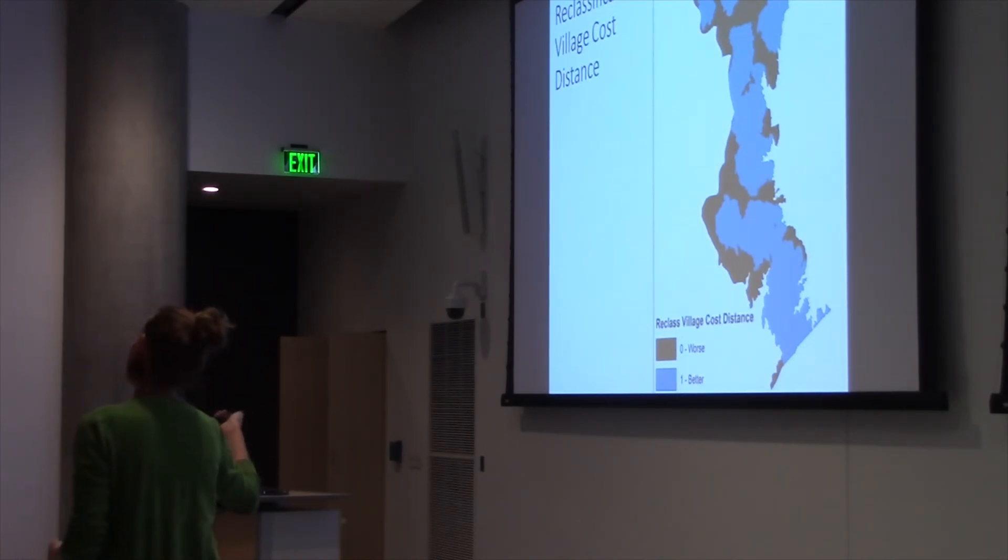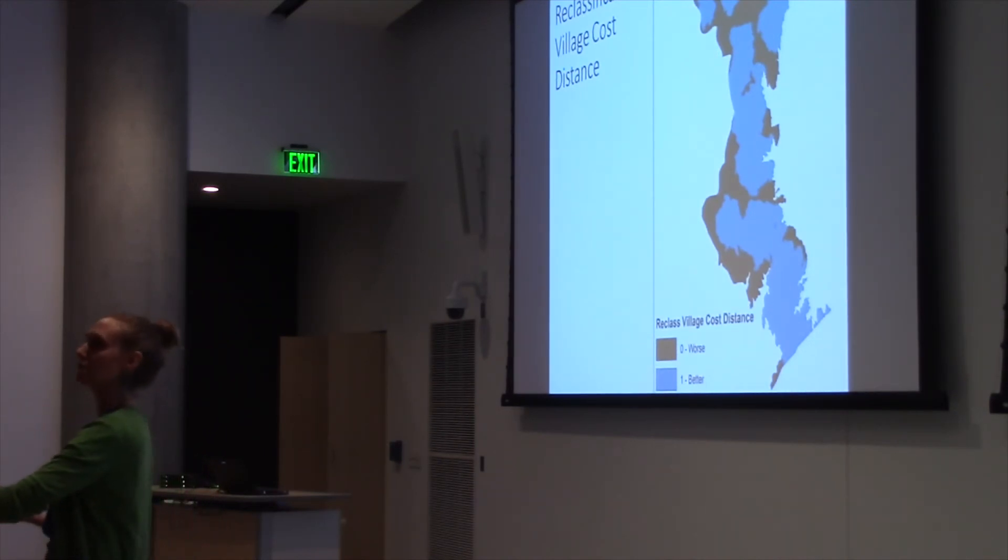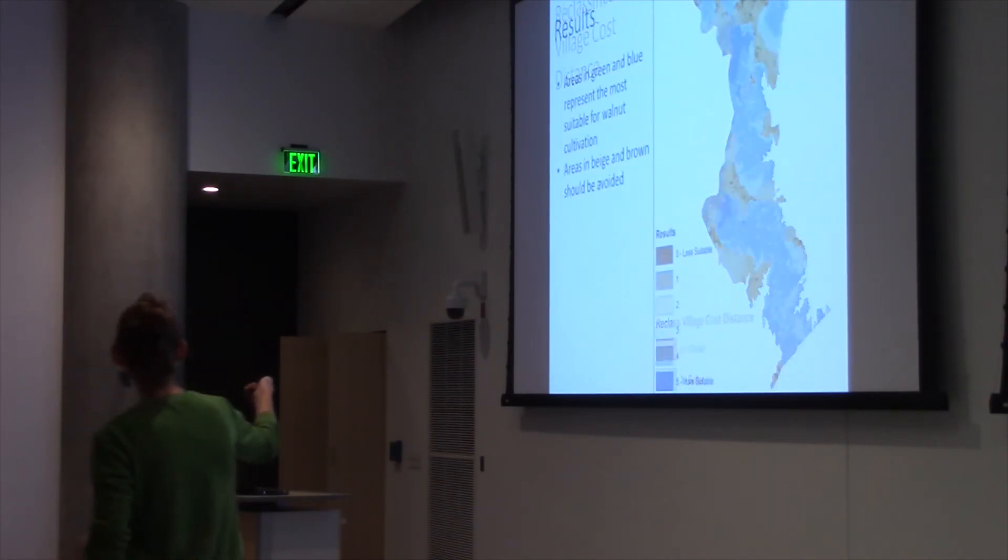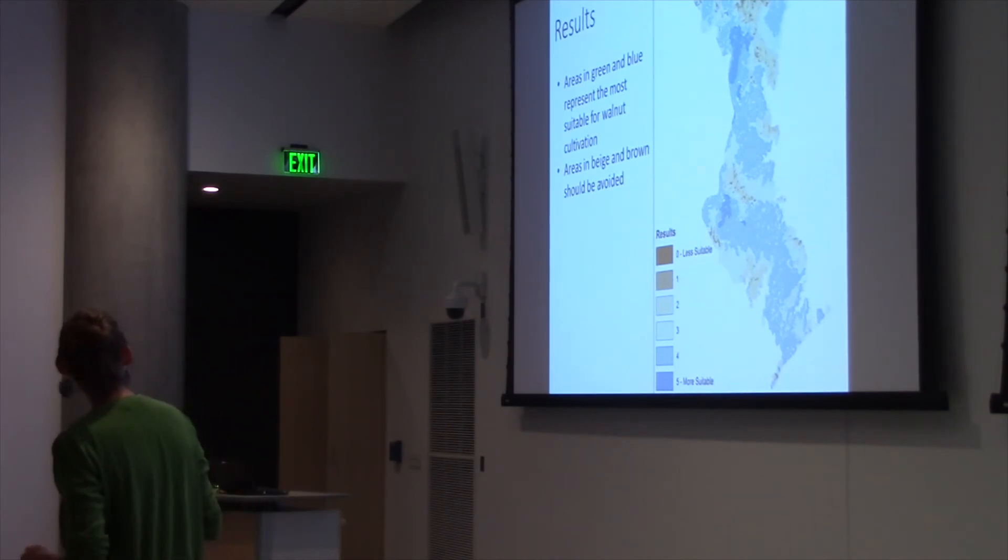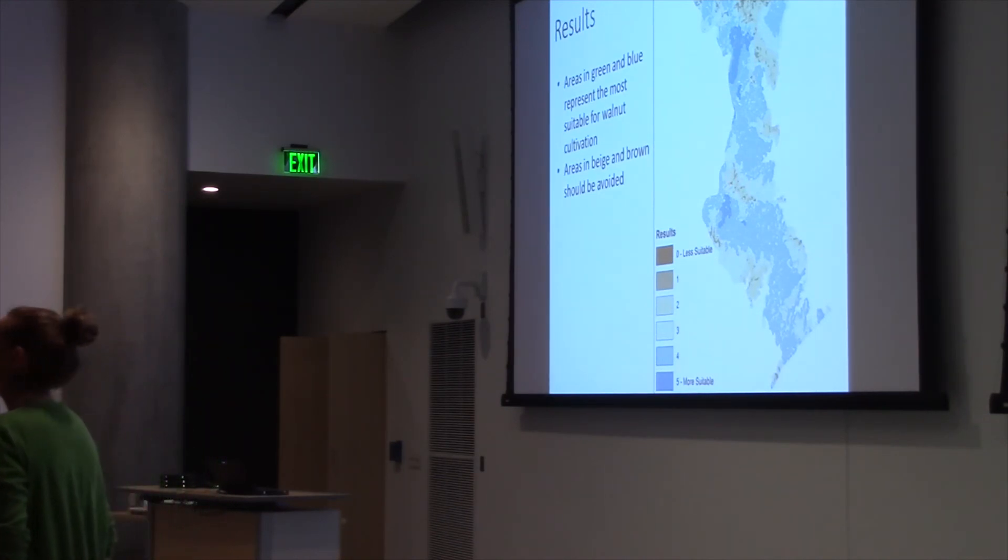Then I added them all together, seeing as how plants are not an all-or-nothing organism. It's not as though if they have a slightly steeper slope than is suitable, they're going to just die. I used raster addition to come up with these results. Areas in green and blue represent the most suitable for walnut cultivation. The areas in the beige and the brown are least suitable, and so these areas should be avoided.